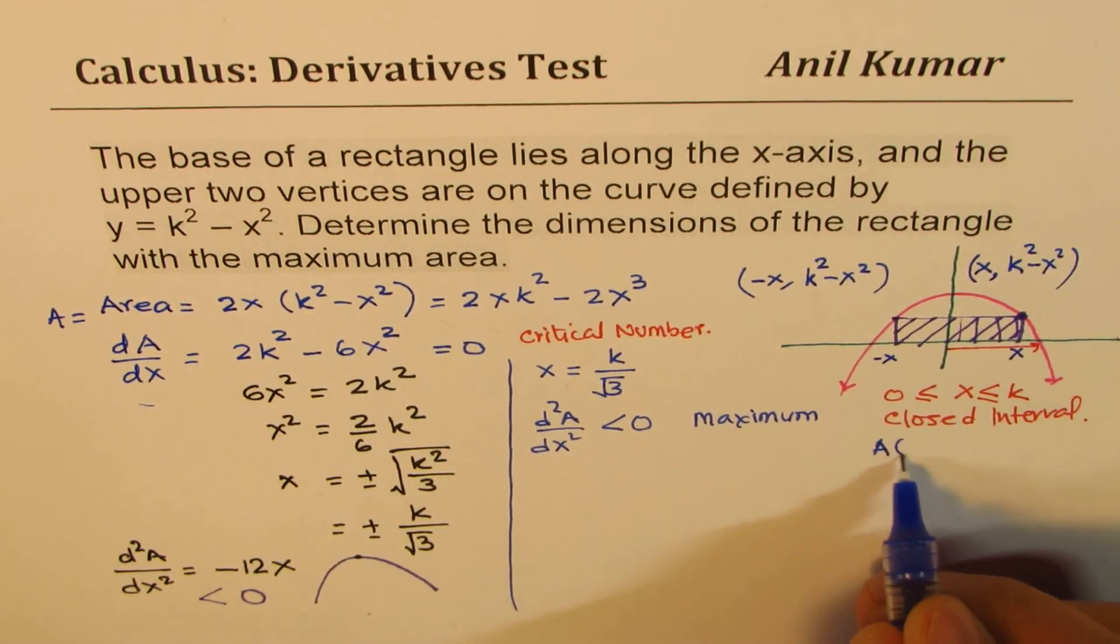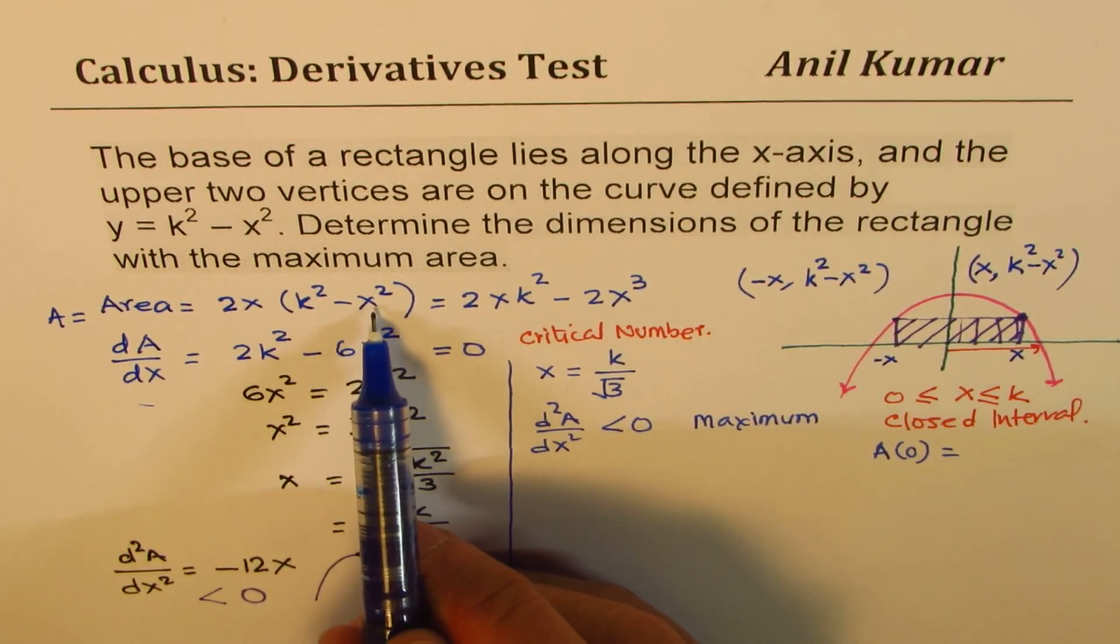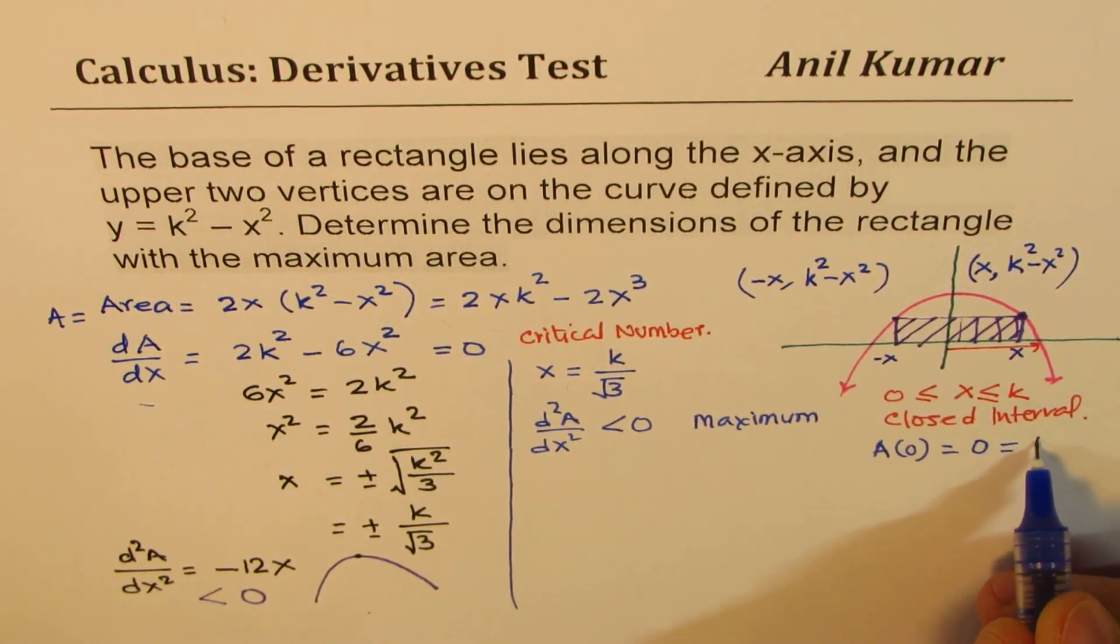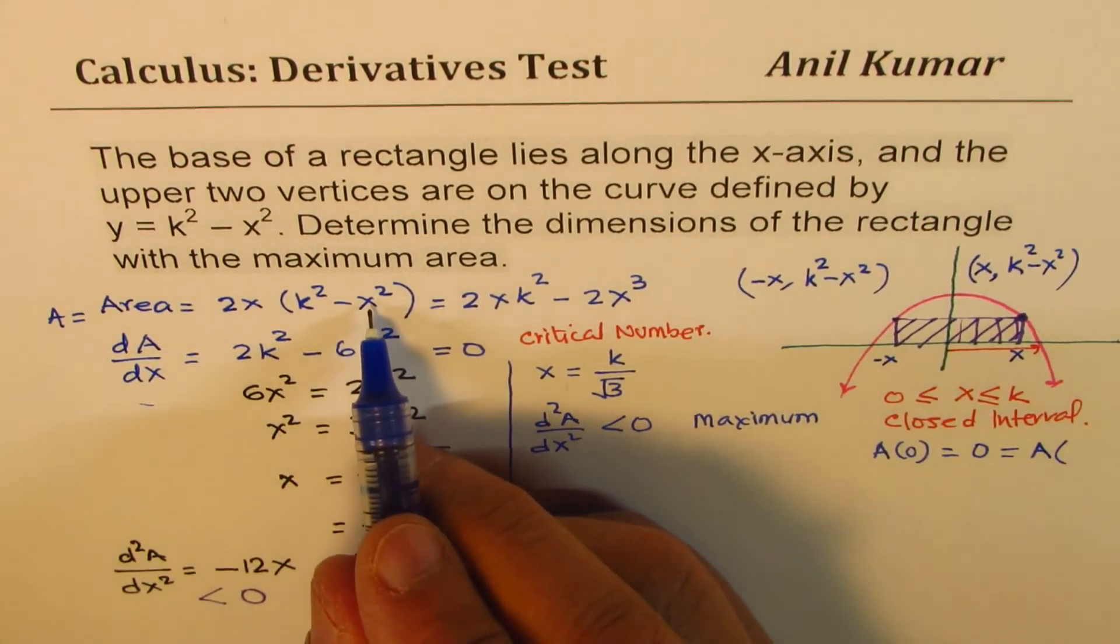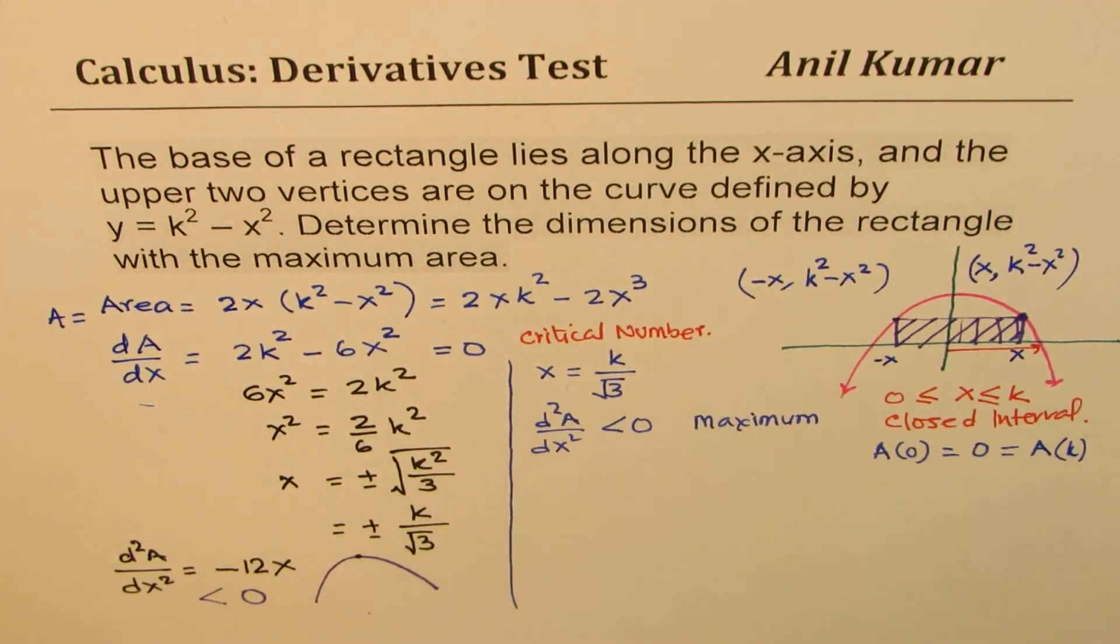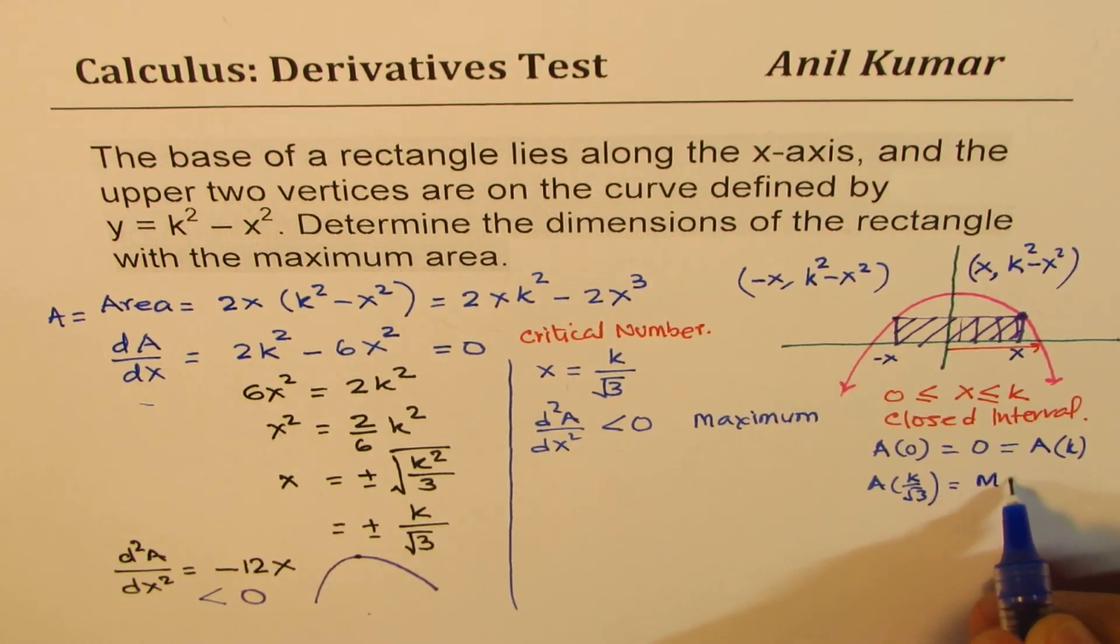So what you find here is that the area when x is 0 will be equal to, if I substitute x as 0, then the area becomes 0. And if I substitute x as k, even then the area is 0. So whatever area we get is maximum. So that means area for the value of k over square root 3 is maximum. Is that okay?